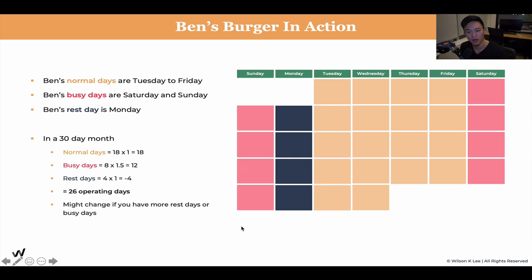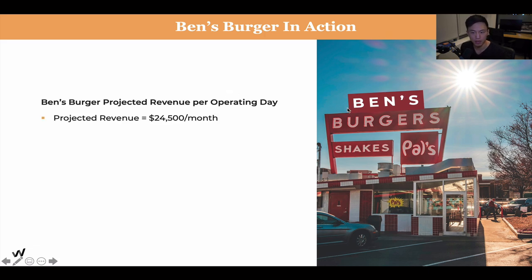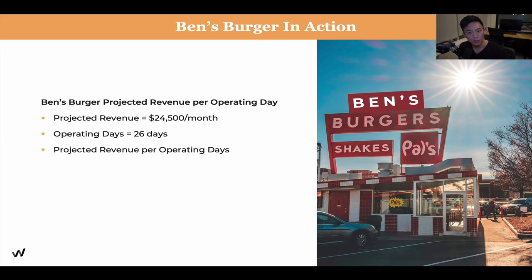For Ben's Burger's projected revenue per operating day: we projected that Ben's Burger would be making around $24,500 per month — a projection we did in lesson one of module four. With 26 operating days, that means: projected revenue per operating day = $24,500 ÷ 26 = $942.31. That means every day they open, on average, they should be making $942.31 in order to hit this goal.